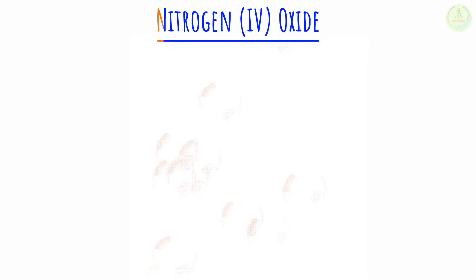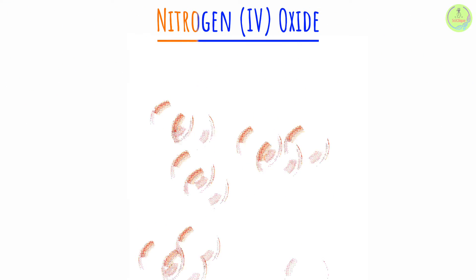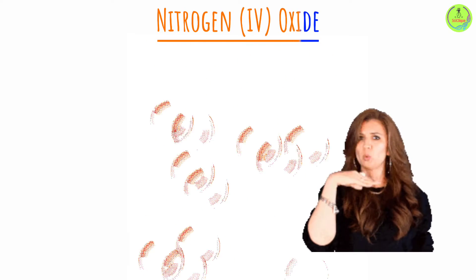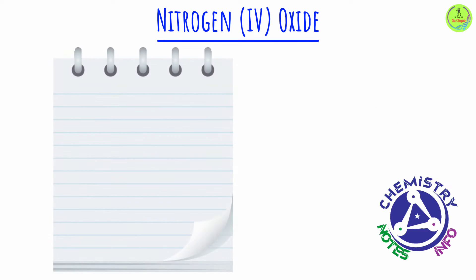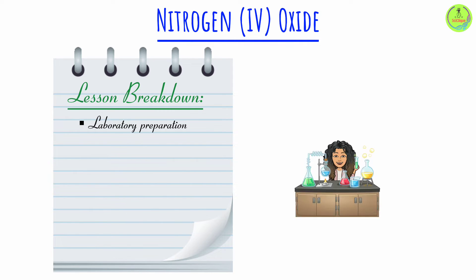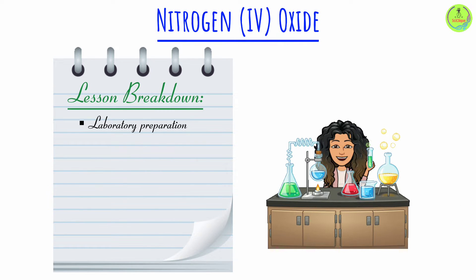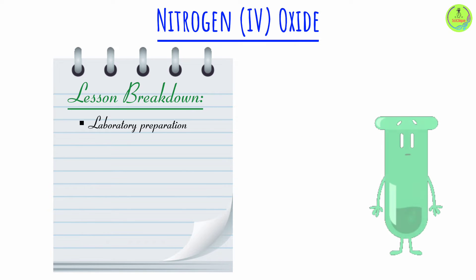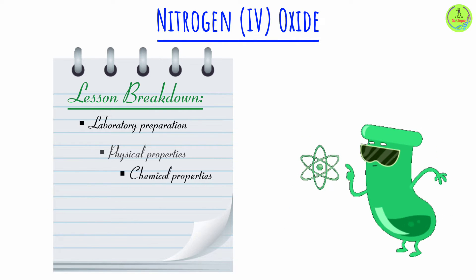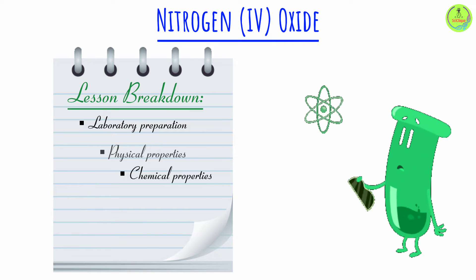Nitrogen dioxide (NO₂) — the brown gas with a pungent irritating smell. In today's lesson, we are going to discuss: number one, how to prepare nitrogen dioxide in the lab; number two, what are its physical properties; and lastly, what are the chemical properties of NO₂ gas.